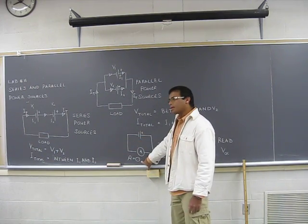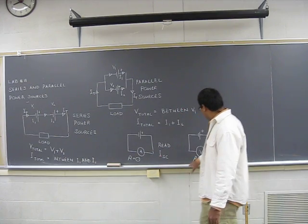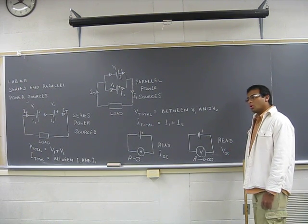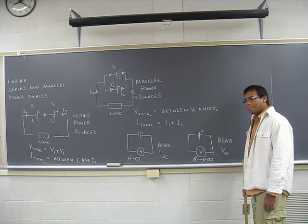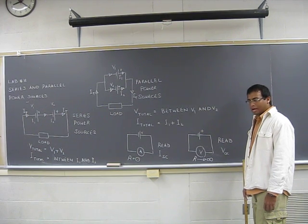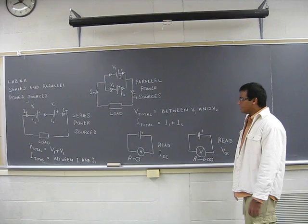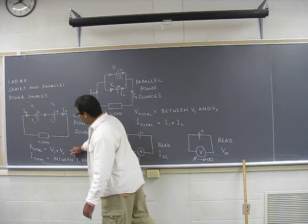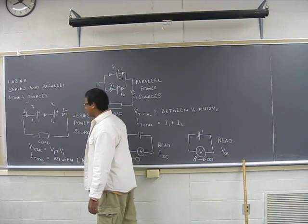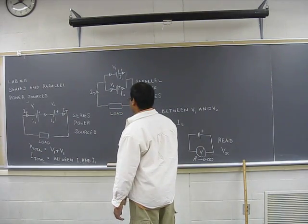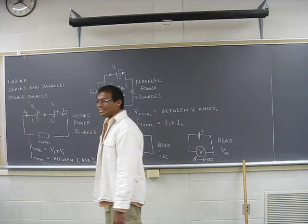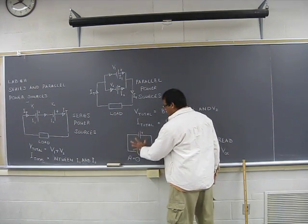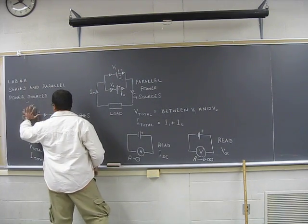Attach the ammeter, read the current - that will be short circuit current. Attach the voltmeter directly to the power supply, read the voltage - that is open circuit voltage. Now we have to fill the table. We are going to find the total voltage given the individual voltages and currents for the series circuit, and also we have to find the total current that gets established in this case.